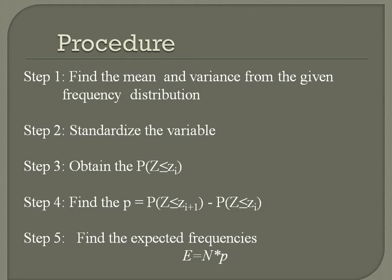This is the procedure. Step 1: find the mean and variance from the given frequency distribution. Step 2: standardize the variable. Step 3: obtain the probability of z less than or equal to z_i. Step 4: find p. Step 5: find the expected frequencies using the formula E equal to N into p, where capital N is the total frequency.